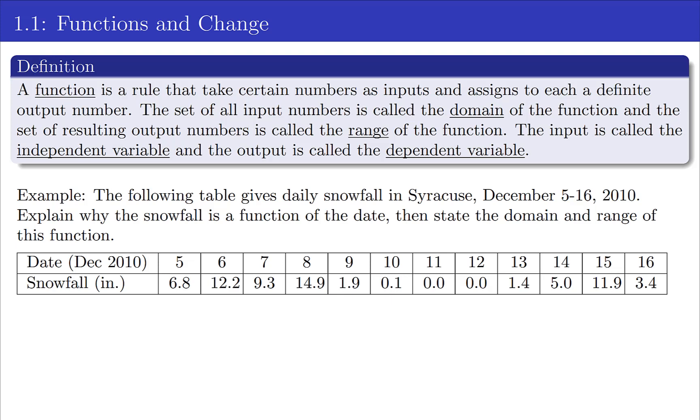An input will create an output that you can always get just one output. If you take all the input numbers, or perhaps you could think of it as all the values x can take, we call that the domain of the function, and the resulting outputs we would call that the range.